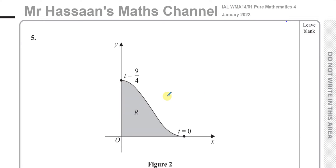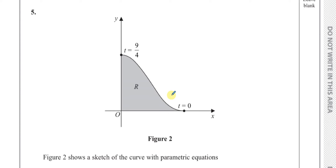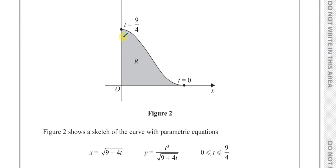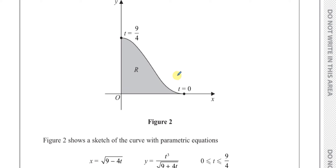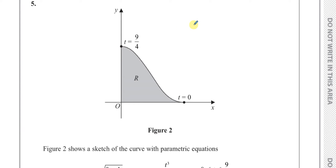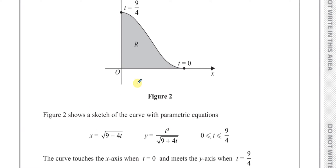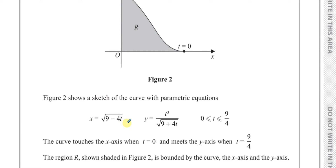This question is about finding the area under a curve which is defined parametrically. We've got to find the area R which is enclosed by the y-axis and the x-axis, and the places where the curve cuts the x and y-axis. The curve is not defined in Cartesian form — it's given in parametric form where x and y are both in terms of a third parameter called t.